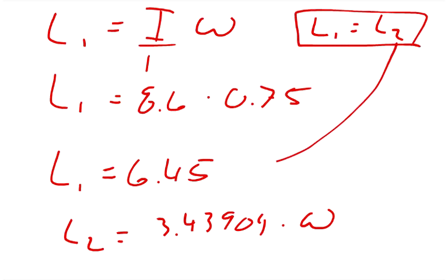Well, we don't know what that is. So we can substitute if L2 equals L1, we know that L2 equals 6.45. So we can say that 6.45 equals 3.43904 times the angular velocity, the angular speed.